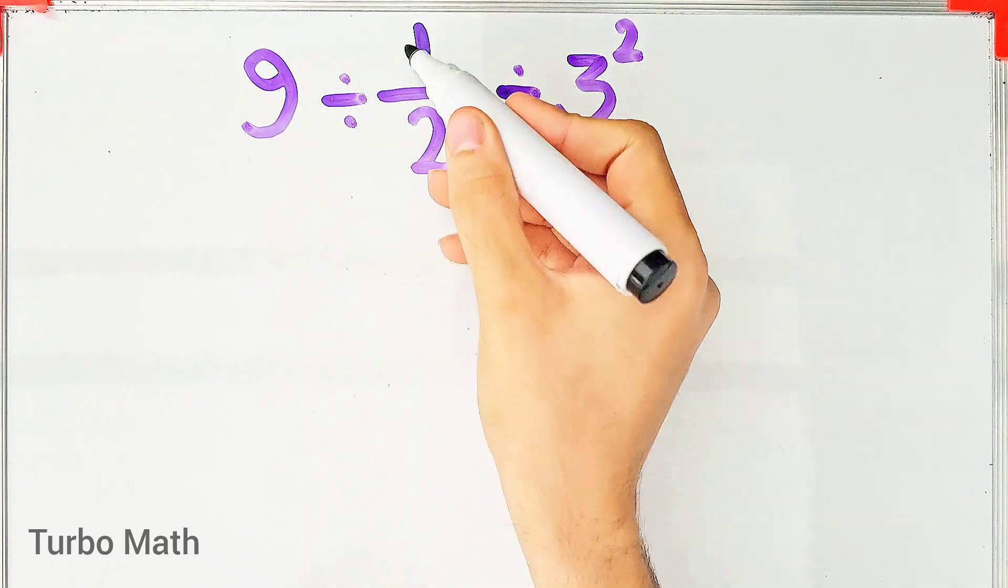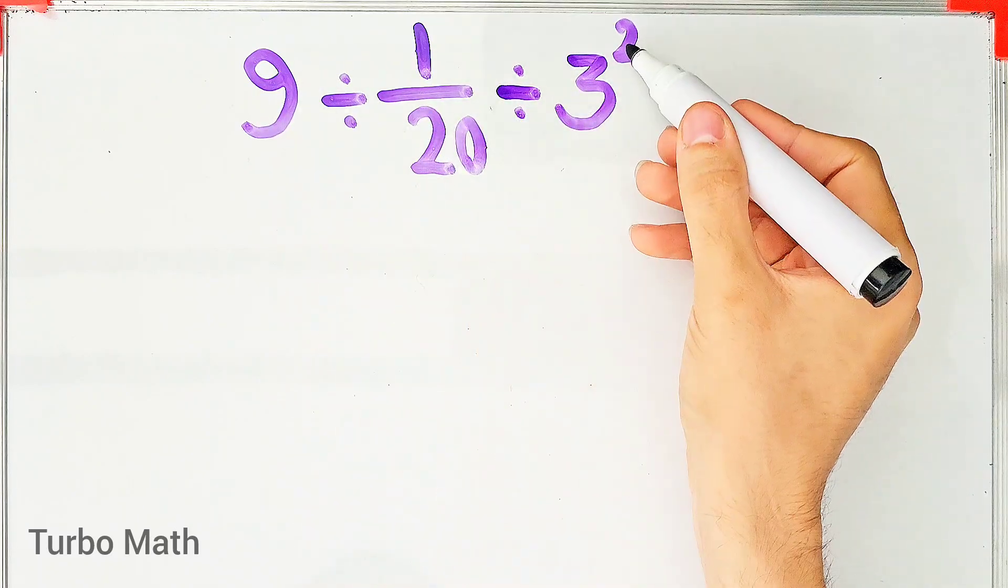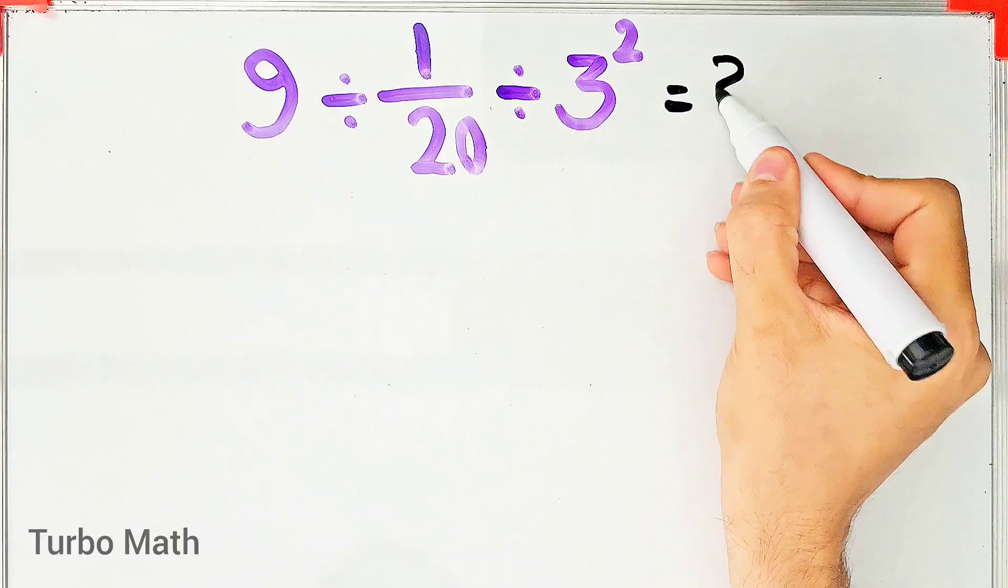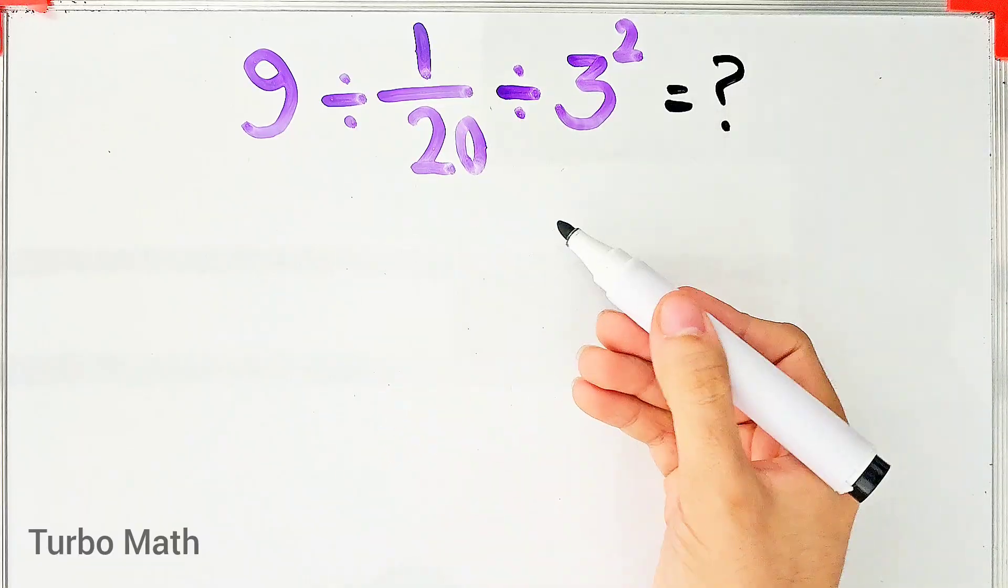9 divided by 1 over 20, then divided by 3 to the power of 2. What is the answer to this question? Hi friends and welcome to TurboMath channel.